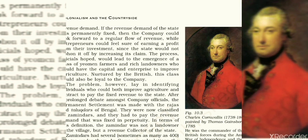The Permanent Settlement had several features. It was made with the rajas and taluqdars of Bengal — a taluqdar literally means one who holds a taluk or connection, which later became a territorial unit. The Permanent Settlement recognized the zamindars as proprietors of the land with permanent hereditary rights. However, the zamindar was not a landowner in the village but only a revenue collector for the state.